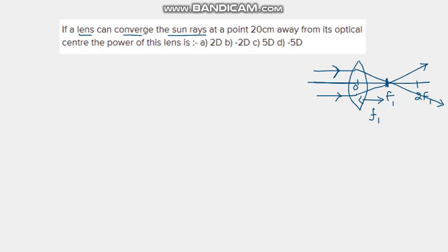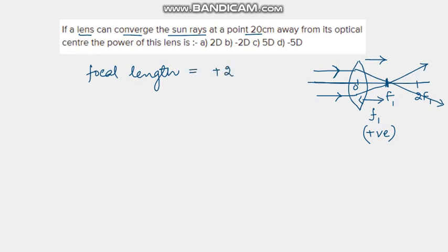Since the focus lies to the right of the optical center, it is taken as positive as per sign convention. To measure the focal length, we go in the direction of the light rays, so f is positive. Since the rays meet at f1, which is 20 centimeters away from the optical center, the focal length of the lens is plus 20 centimeters, equal to 0.2 meters.